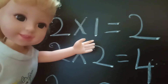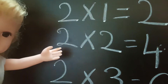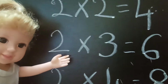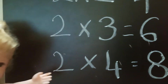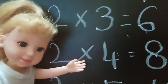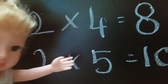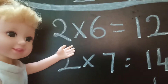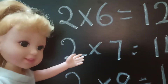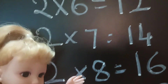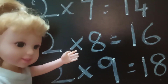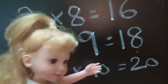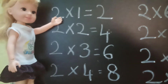2×1=2, 2×2=4, 2×3=6, 2×4=8, 2×5=10, 2×6=12, 2×7=14, 2×8=16, 2×9=18, 2×10=20.